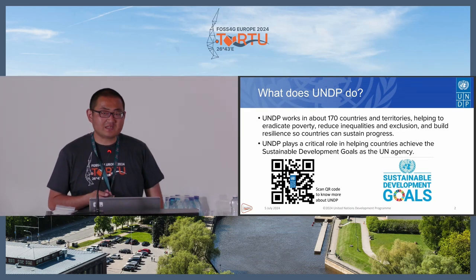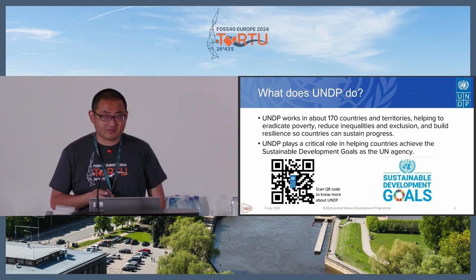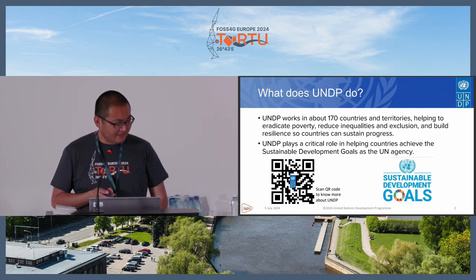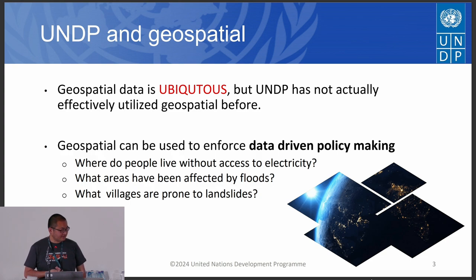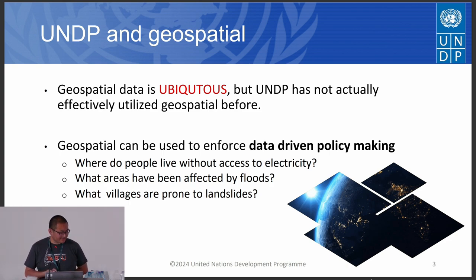What is UNDP? UNDP is one of the UN agencies which tries to help countries eliminate poverty and reduce inequalities and exclusions. UNDP also plays a critical role in helping countries achieve SDG goals. Geospatial data is ubiquitous, but previously UNDP had little tradition of using GIS — we haven't effectively utilized geospatial datasets in the organization.